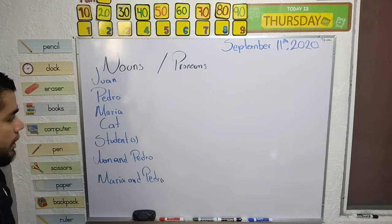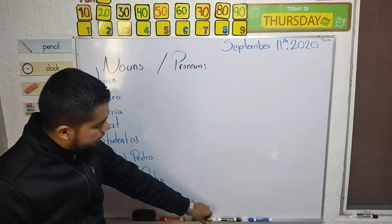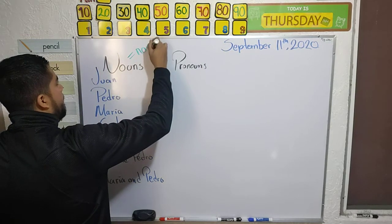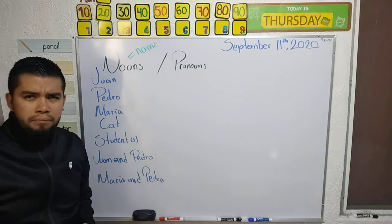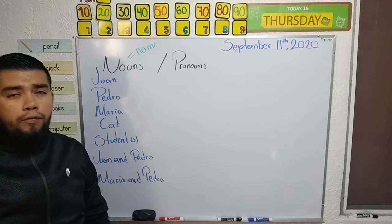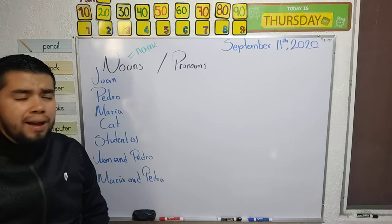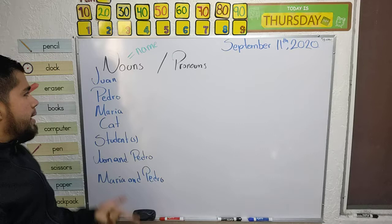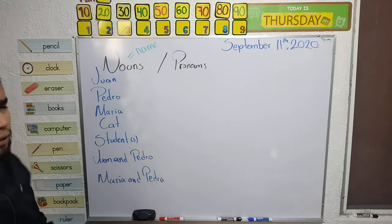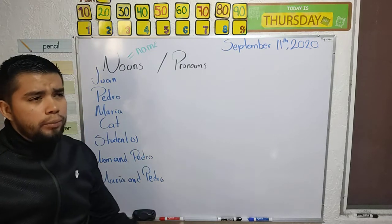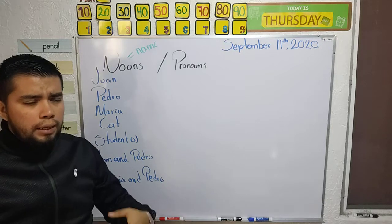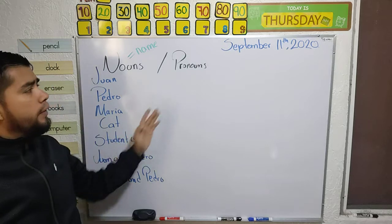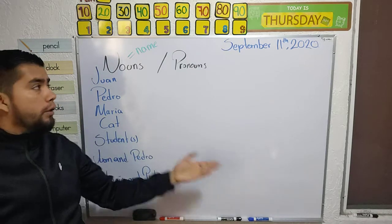Very easy. A noun is a name — it could be the name of a person, the name of an object, the name of an idea. Everything that has a name is a noun. For example: Juan, Maria, cat, table, school, computer — all of those are nouns.